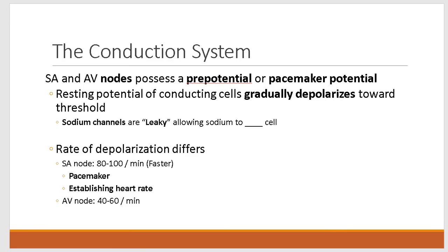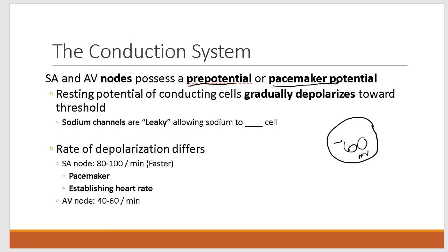When we look at the conducting cells of the SA node and AV node, we see that they have what we call a pre-potential, or pacemaker potential. The resting membrane potential of these cells is not stable. Instead, their membrane potential gradually depolarizes to threshold voltage. The normal resting membrane potential of SA and AV node cells is about negative 60 millivolts, and their threshold potential — the voltage needed to generate an action potential — is about negative 45 millivolts.